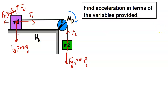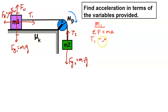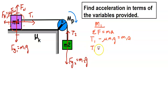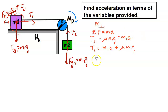Starting with m1, Newton's second law gives: t1 − μ·fn = m1·a. Since fn = m1g, this becomes t1 − μ·m1g = m1·a. Solving for t1: t1 = m1·a + μ·m1g. This form will make it easier to combine variables later.